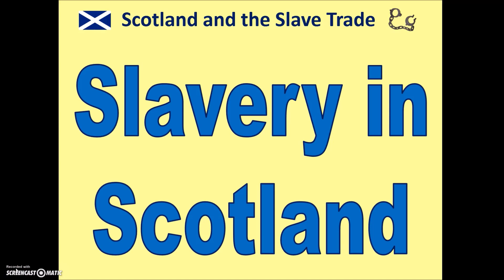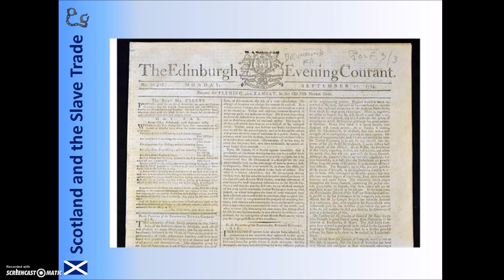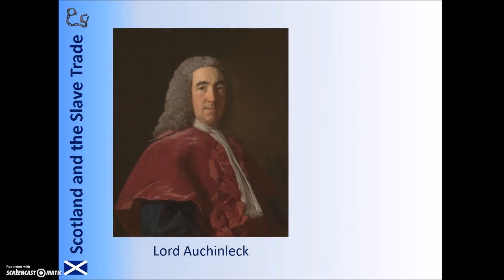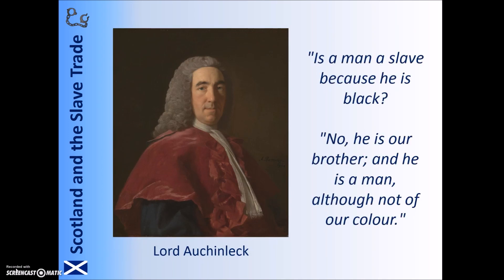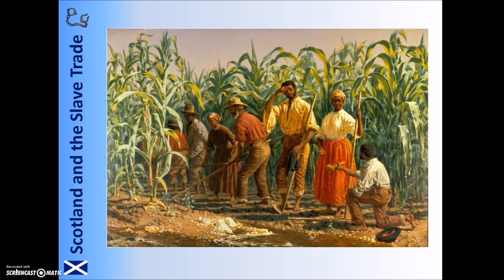Although slavery mainly took place in the Americas, some people brought slaves from Africa to Scotland. There are various examples of African slaves living in grand Scottish homes, working in roles such as cooks, cleaners, maids, and butlers. Slaves were quite openly sold in Scotland, with adverts appearing in local newspapers. One such advert from a 1769 edition of the Edinburgh Advertiser described 'a handsome black boy about 13 years of age very well qualified for making a household servant.' However, in 1788 Scotland eventually banned the owning of slaves — in Scotland at least — following the case of Joseph Knight, a slave who worked for the Scotsman John Wedderburn, who sued for and won his right to freedom. Despite this, it remained perfectly legal for Scots to own slaves in the Americas for more than half a century after this.